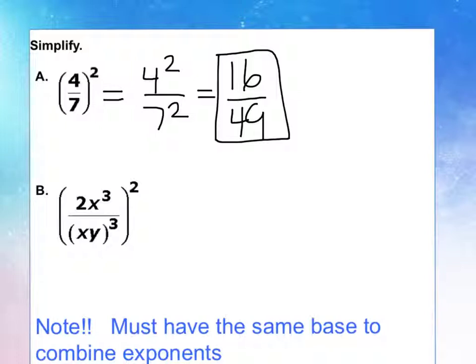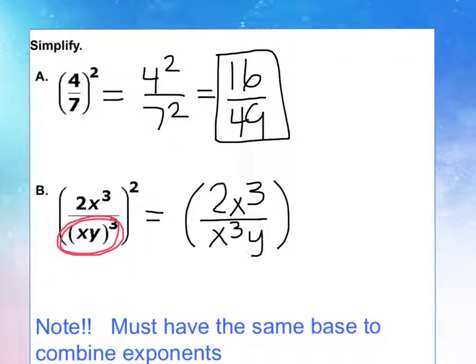Example B, we have to actually apply order of operations. We need to work with the innermost parentheses first, so we're going to work with this, and then we're worried about the 2 on the outside. So now I'm going to have still 2x to the 3rd, and this is going to be over x to the 3rd, y to the 3rd, n squared.